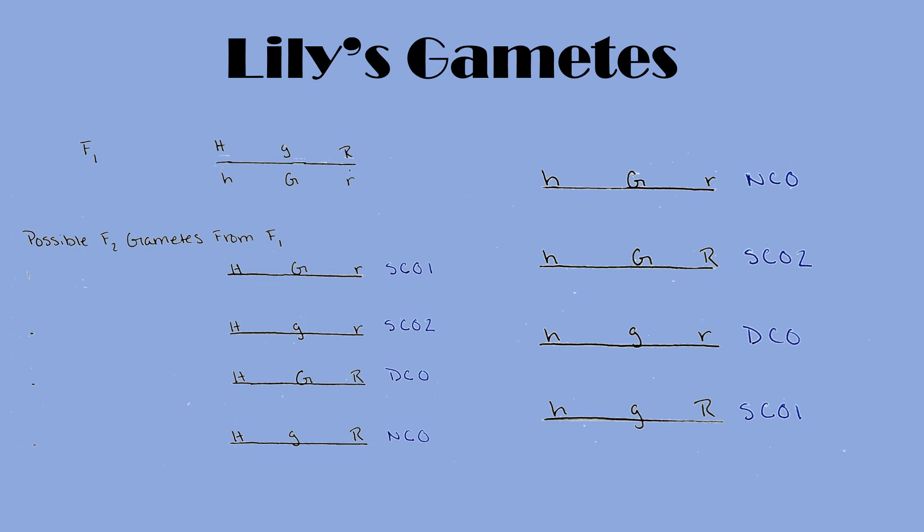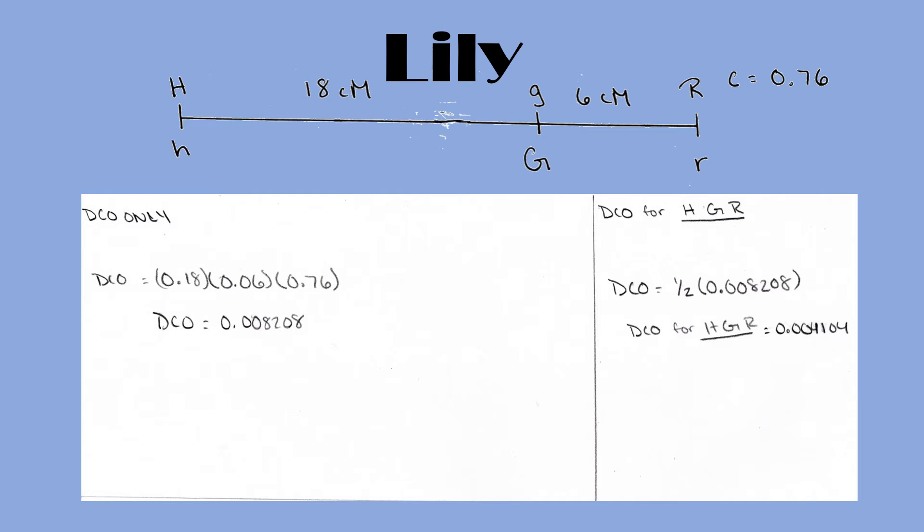The rest of the gametes follow below. Now that we know the gamete type, let's say we want to predict the probability that we get the genotype H, G, R, or horned, green, and spotted.